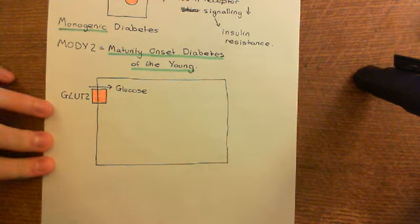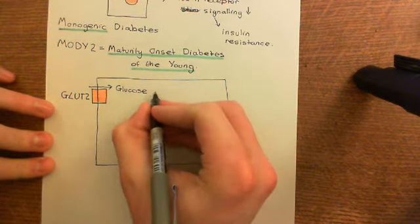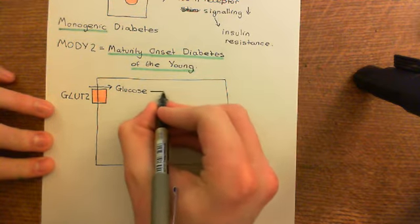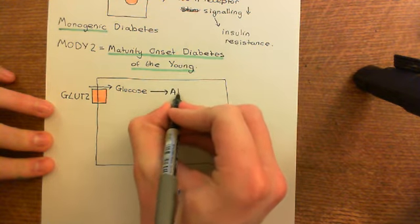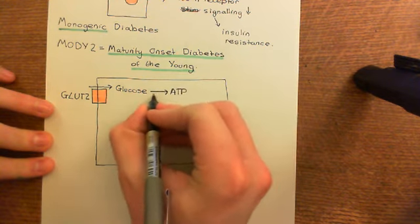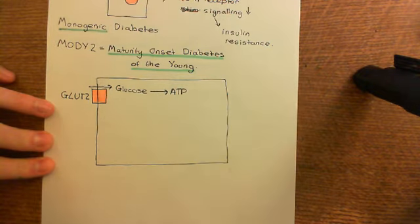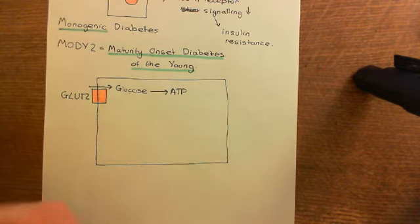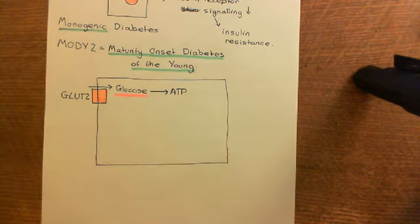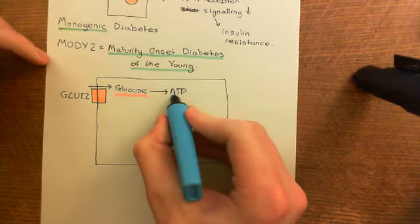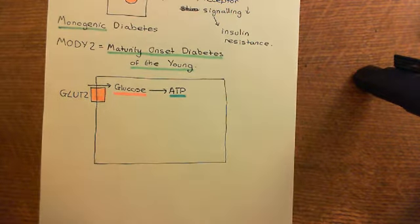This glucose coming into the cytoplasm of the pancreatic beta cell is going to be respired. It's going to go through the respiratory pathways — those huge chemical pathways — and this results in the production of ATP. So I'll summarise the entire of respiration as this arrow, which results in the production of ATP.